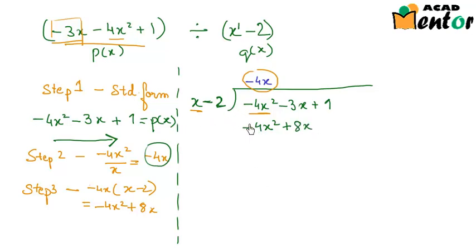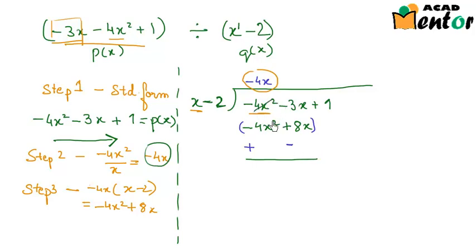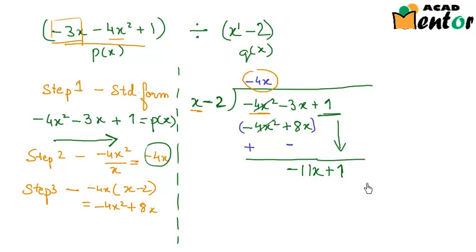The next step is to subtract this polynomial from the dividend. The signs change: minus 4x squared becomes plus 4x squared and plus 8x becomes minus 8x. The first terms cancel — minus 4x squared plus 4x squared equals zero — leaving minus 3x minus 8x, which is minus 11x. Bringing down the plus 1 gives the new dividend: minus 11x plus 1.